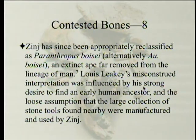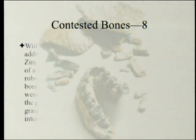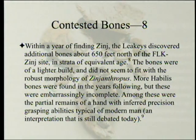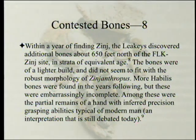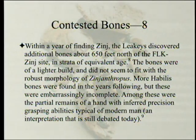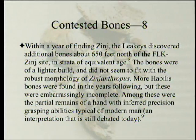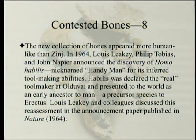Lewis Leakey's misconstrued interpretation was influenced by his strong desire to find an early human ancestor, and the loose assumption that the large collection of stone tools found nearby were manufactured and used by Zinj. Within a year of finding Zinj, the Leakeys discovered additional bones about 650 feet north of the FLK Zinj site in strata of equivalent age. The bones were of a lighter build and did not seem to fit with the robust morphology of Zinjanthropus. More habilis bones were found in the years following, but these were embarrassingly incomplete. Among these were the partial remains of a hand with inferred precision grasping abilities typical of modern man — an interpretation that is still debated today. The new collection of bones appeared more human-like than Zinj.